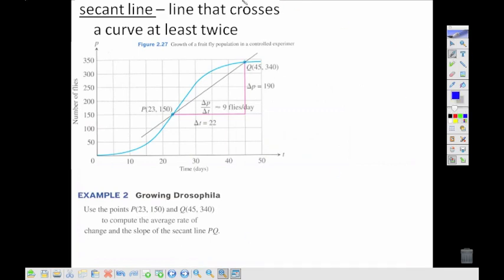Now first of all, we're going to define a secant line. A secant line is when we're crossing a line more than one place.